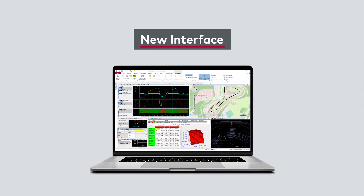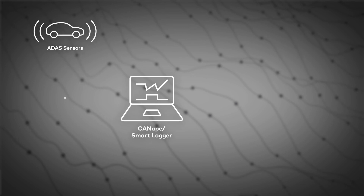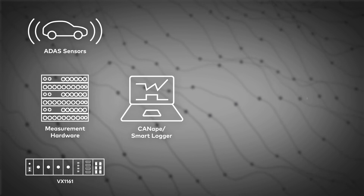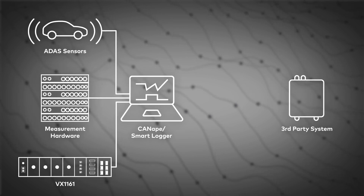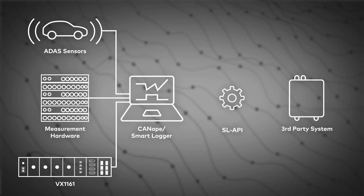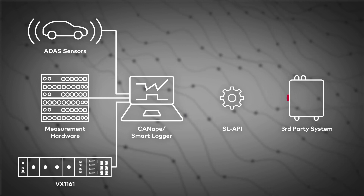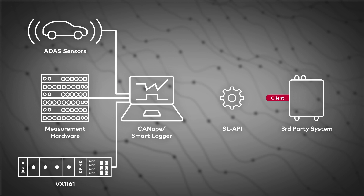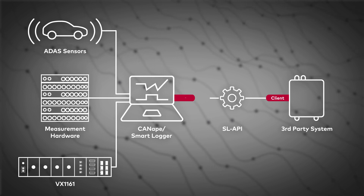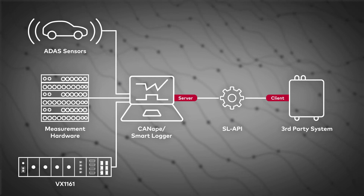Do you have different recording systems from third parties and want to benefit from the advantages that only Canopy or Vector hardware can offer you? We designed a new open measurement data interface for exactly this case: our SL API. Integrate the SL API client into your third-party system and connect them to the SL API server in Canopy or your smart logger.